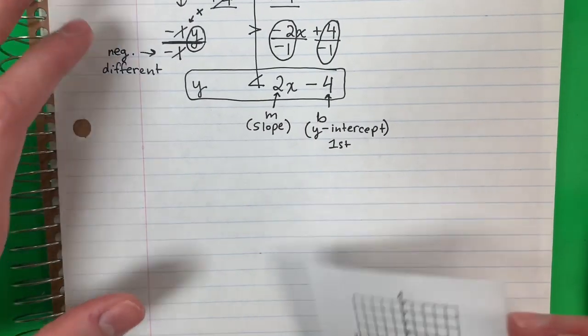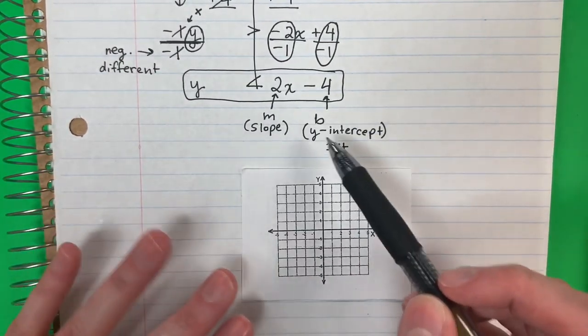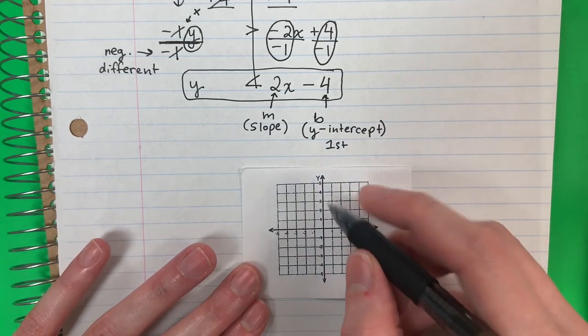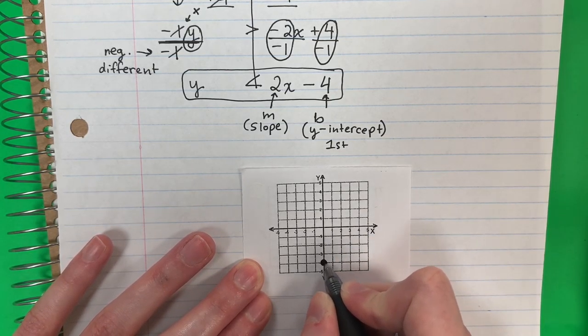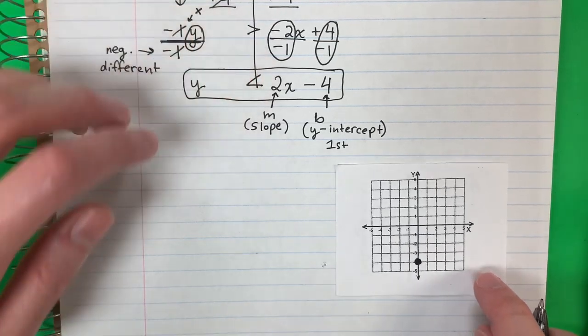So here is my graph. So I need on the y, sobre la y, I need to find negative four. Necesito encontrar negative four. So y negative four. Point. And my slope is two. Mi slope is dos.